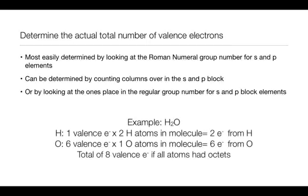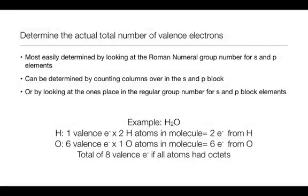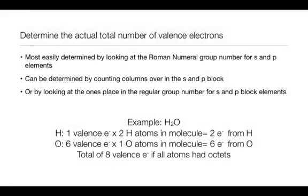If we extend our example now to water, we will see that hydrogen in group one has one valence electron. There are two hydrogen atoms in the molecule. That gives us two electrons from the hydrogen. With oxygen, it's in group 16, or Roman numeral six, so it has six valence electrons. There is only one oxygen atom in the molecule, so that gives us six actual electrons from oxygen, to give us a total of eight valence electrons in all contributed by each atom.